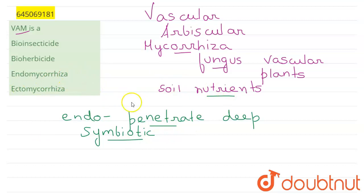These mycorrhiza form a vesicular-like structure - they form a network of vesicles. So amongst our options, endomycorrhiza is the right option for this question. The other options bioinsecticide, bioherbicide, and ectomycorrhiza are wrong options.